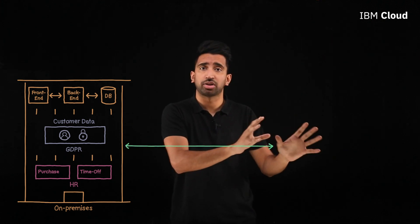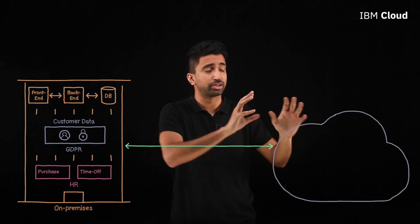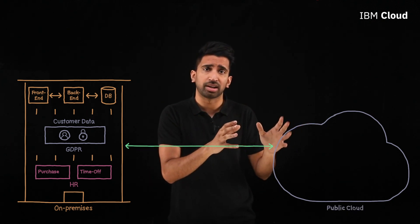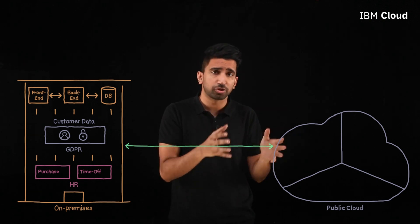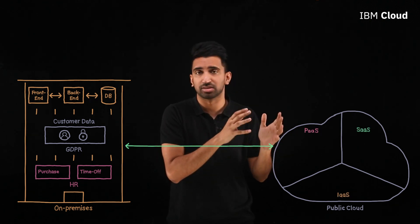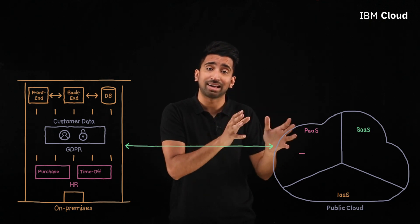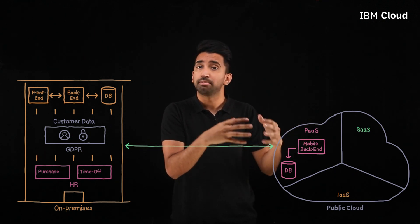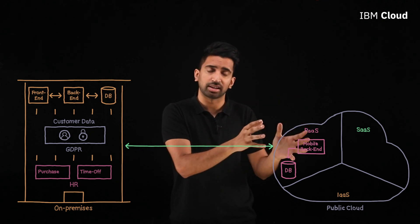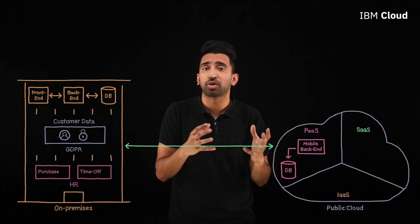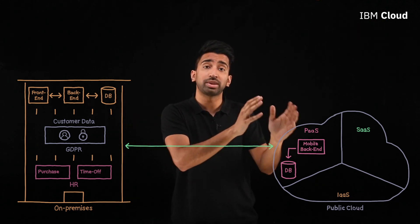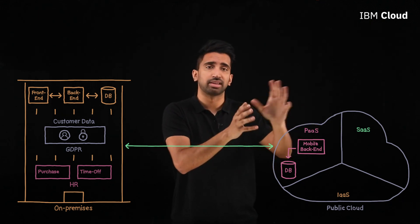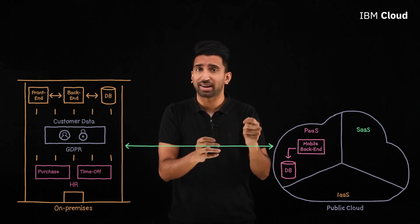They've started the hybrid cloud transformation and begun to take advantage of cloud-native, so let's see what they've done in the public cloud. We've distilled the cloud into three major categories: infrastructure-as-a-service, platform-as-a-service, and software-as-a-service. Starting with PaaS, they've taken advantage of a Kubernetes or container-based environment — maybe even something like managed OpenShift running in the cloud — to create a new version of the same application, but one that works for mobile users, with a mobile back-end and a database for tracking and shipment information.